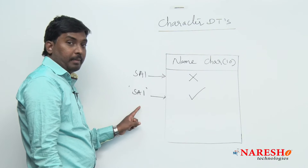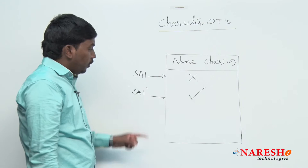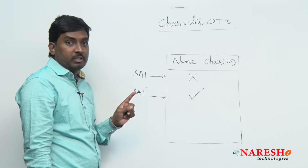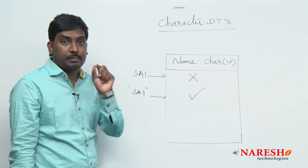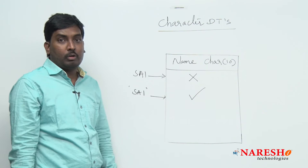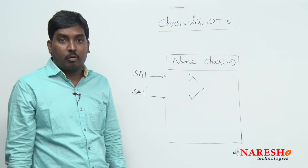Observe here: the same expression 'psi' — when sent without string representation it is not accepted, but when sent with string representation using single quotes, it is accepted and inserted into the column. So by this example, what do you understand? Character data types accept string format values only.